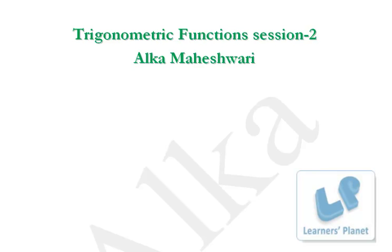Hello friends, welcome to Learner's Planet. This is our second session for trigonometric functions. In the previous session we discussed the four quadrants: in the first quadrant sine theta is positive, in the second quadrant only sine and cosine are positive, in the third quadrant tan and cot are positive, and in the fourth quadrant cos and sec are positive. We also discussed the four important basic relationships.